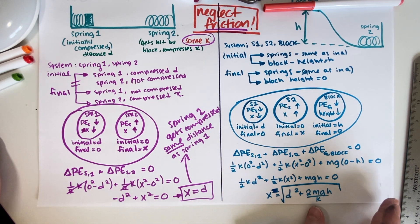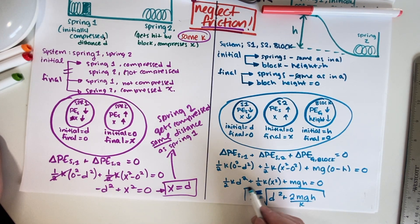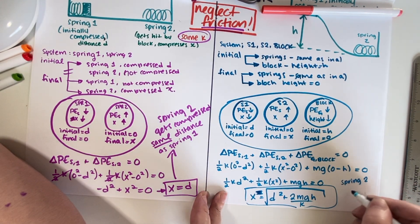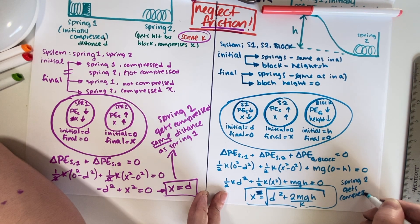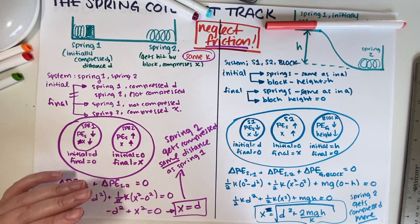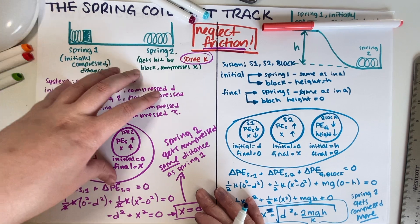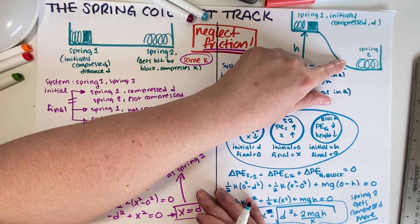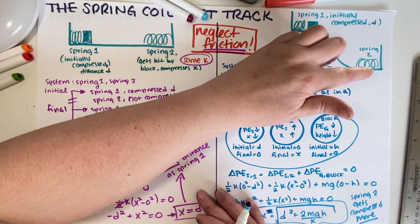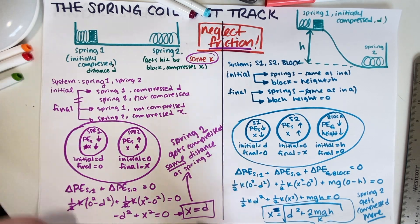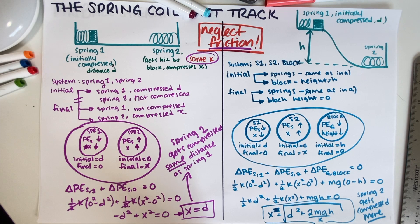This is obviously more than d because of the additional 2mgh/k term. So the final answer is that spring two gets compressed more. Why? This is a closed system and energy is conserved. Whatever spring one gave, spring two took — same as before — but now we have a third energy source: the block is also losing gravitational potential energy, and that energy goes into compressing spring two more. That's the end of the problem — hope you found it useful, please leave a like, and I'll see you in the next video.